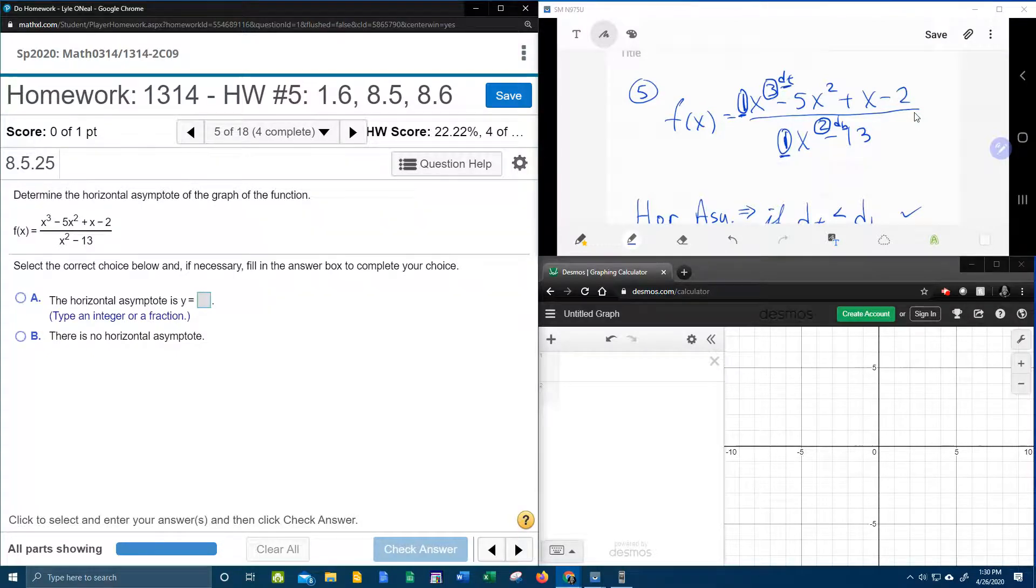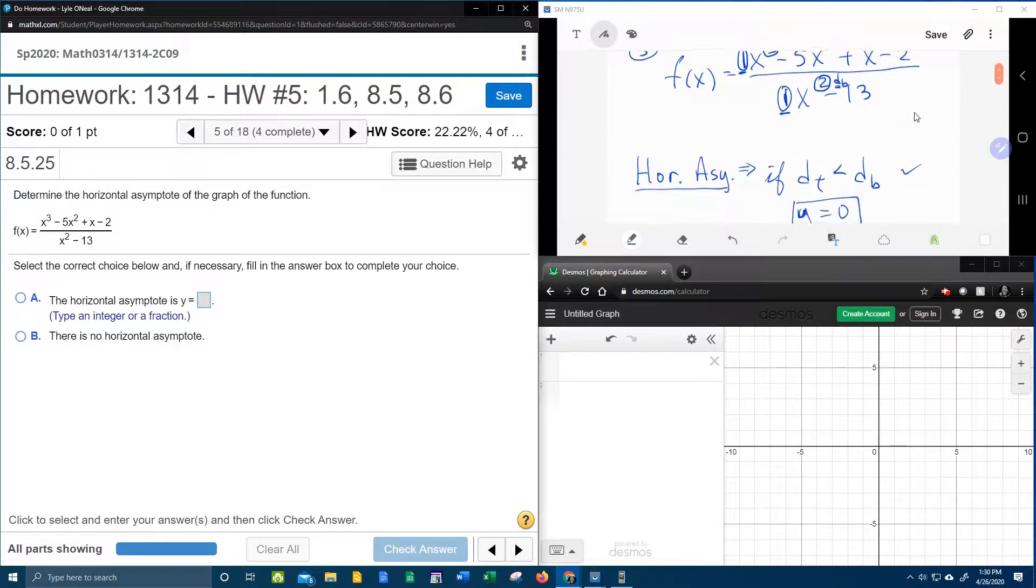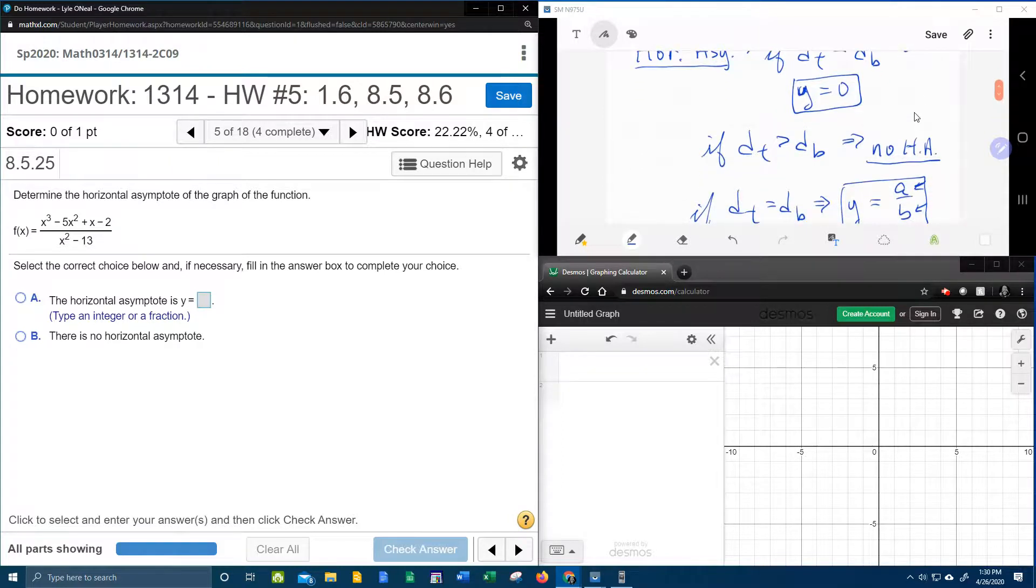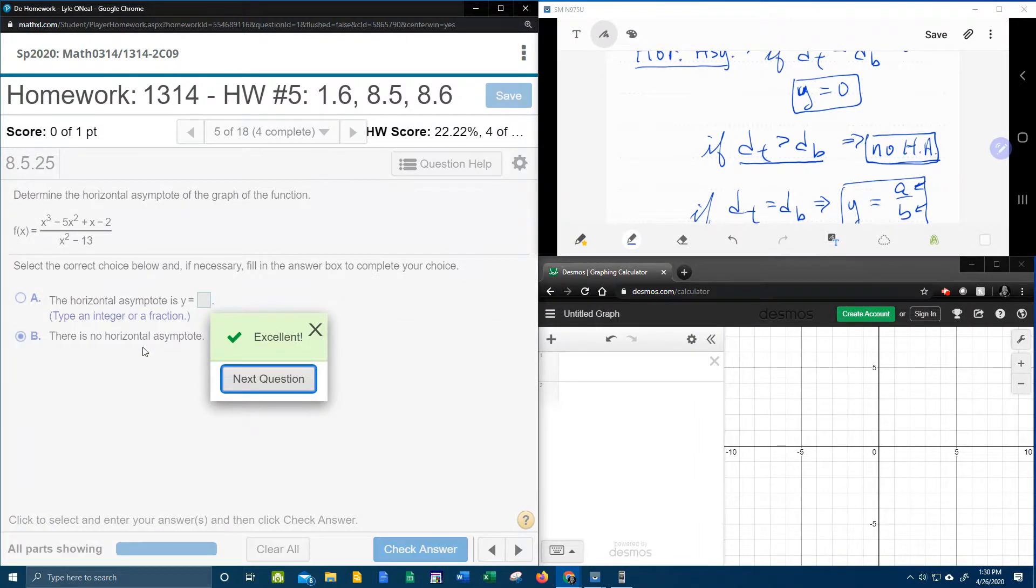the degree of the top is greater than the degree of the bottom. The degree of the top is greater than the degree of the bottom, so we're going to have no horizontal asymptote. And so we want to pick b, there is no horizontal asymptote, and there you go.